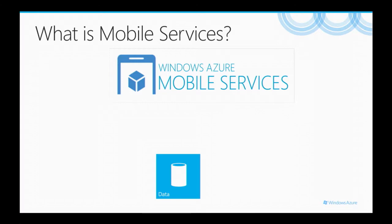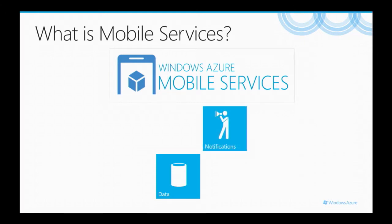Users these days expect their experiences to follow them — they use your app on their mobile phone, go to their tablet, go to their laptop, and want the data to move with them. It's really tricky to do with mobile applications because you have access to local storage, but how do you sync that up with the cloud? Mobile services allows you to very easily sync up with a SQL database in the cloud. For notifications, doing push notifications on iOS and Android can be kind of tricky, but mobile services lets you have one central place for both platforms.